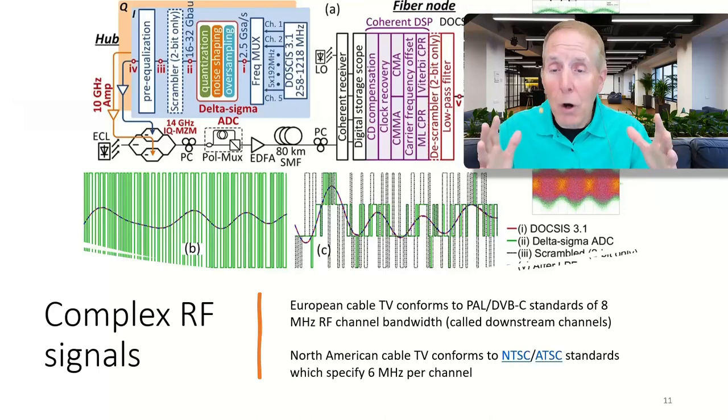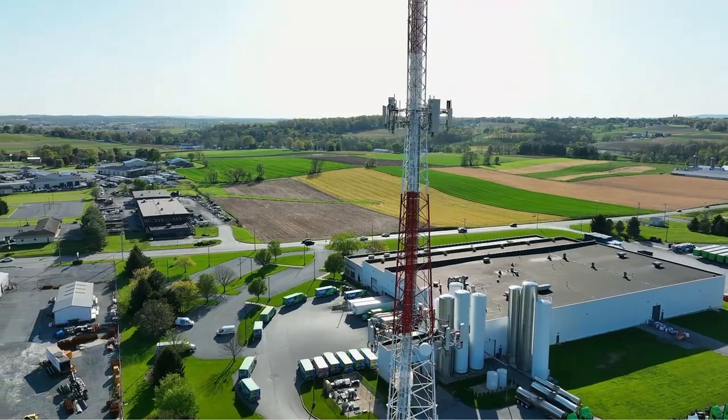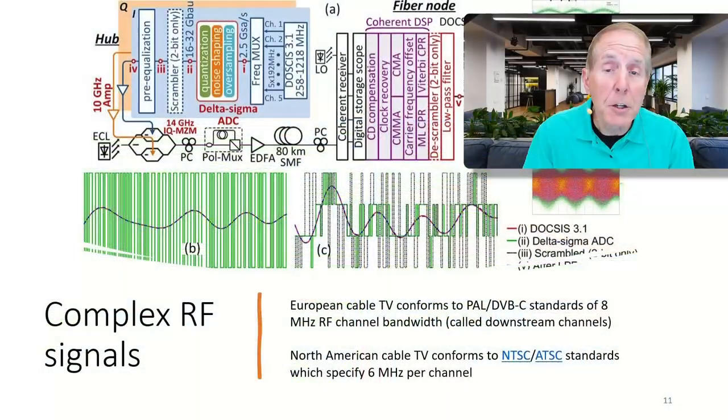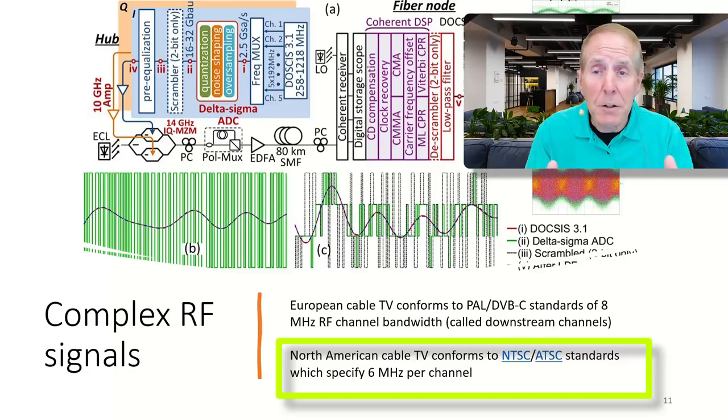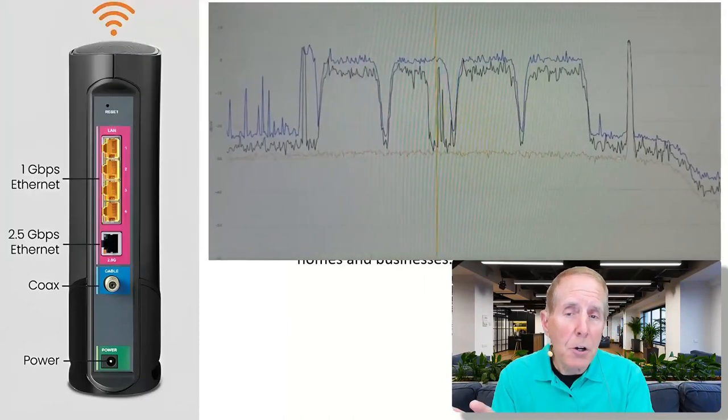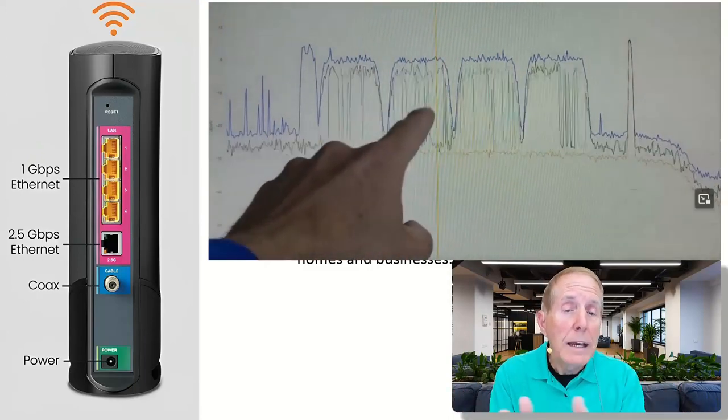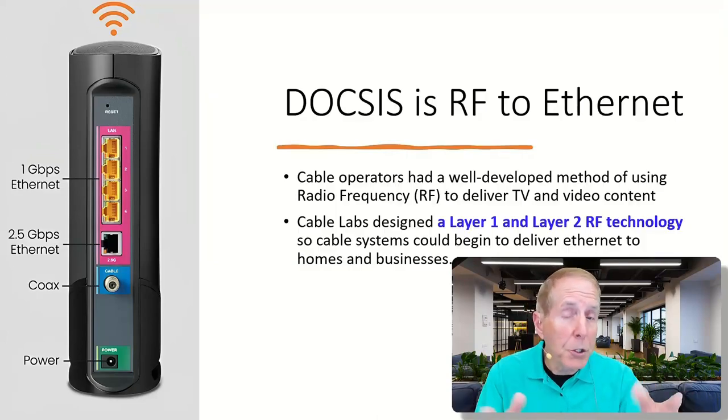Anytime you get involved in RF, radio frequency, it is complex. In Europe, they dedicated up to 8 MHz bandwidth for each channel. In North America, we dedicated about 6 MHz per channel, and that was strictly video delivery. DOCSIS is basically a technology at Layer 1, Layer 2. It's RF, and we're going to take our Ethernet data, modulate that RF signal, and send it down a coax cable.